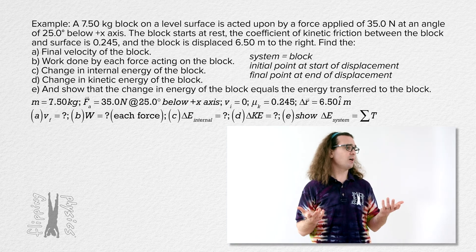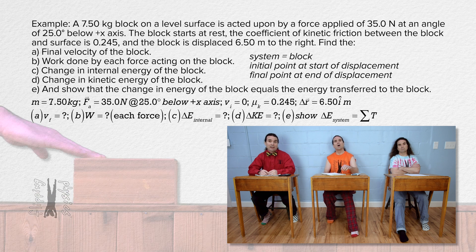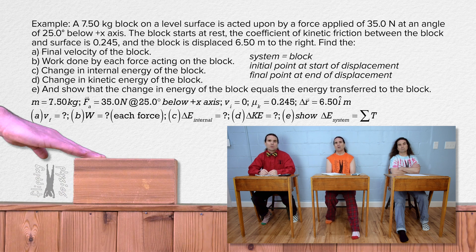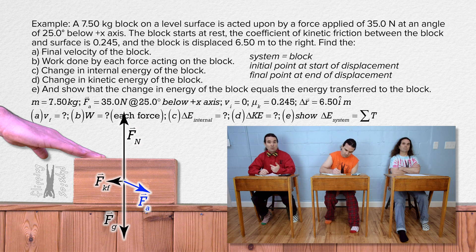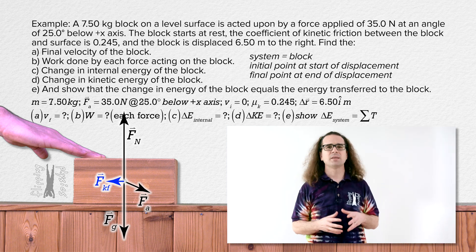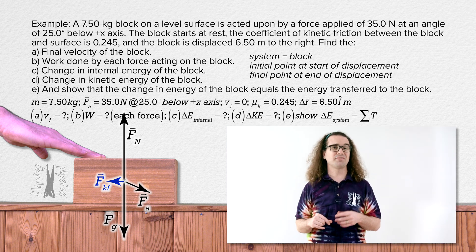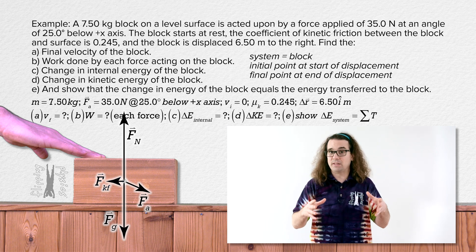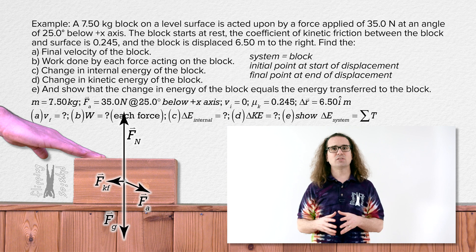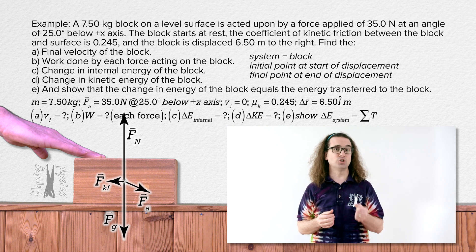Billy, where do you think we should start? With a free body diagram. What forces are acting on the block? The force of gravity is straight down. The force normal is up. The force applied is to the right and below the horizontal 25 degrees. And the force of kinetic friction is to the left. Now, before we sum the forces to find the acceleration of the block so we can use a uniformly accelerated motion equation to solve for the final velocity, let's get the force applied in terms of unit vectors.